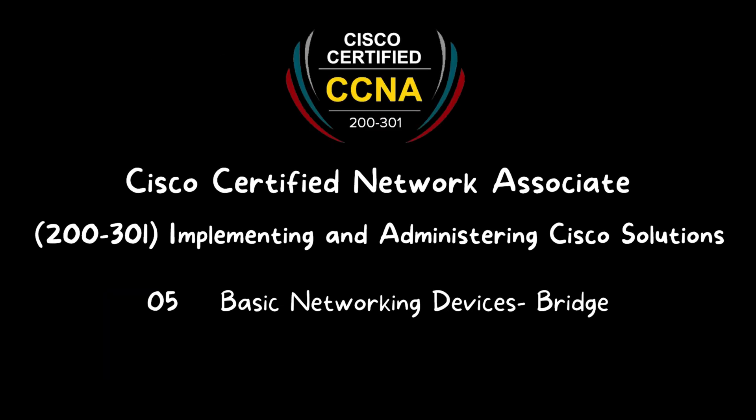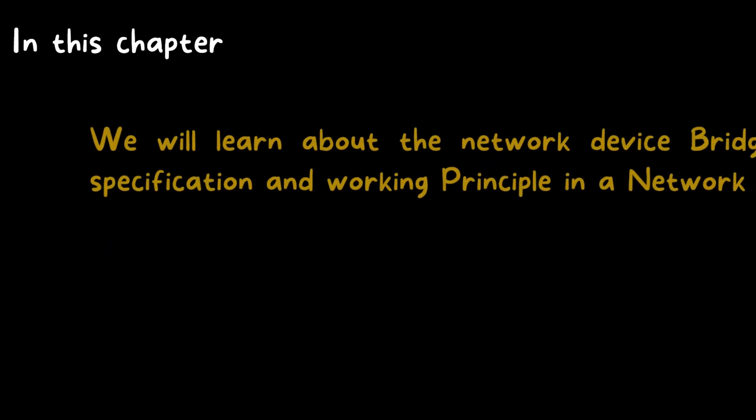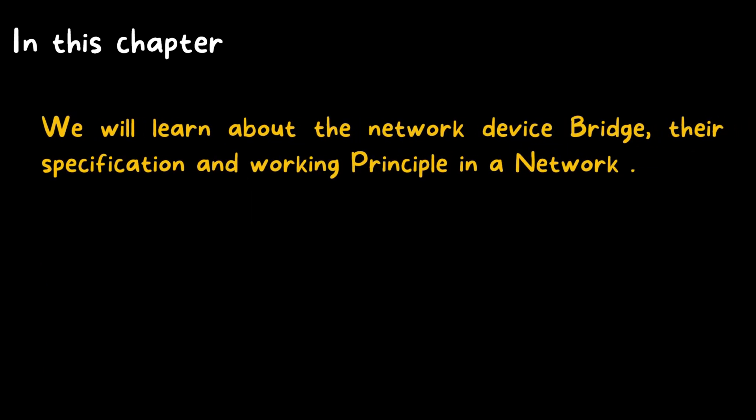Welcome to CCNA 200-301: Implementing and Administering Cisco Solutions, Chapter Number Five — Basic Networking Devices: Bridge. In this chapter, we will learn about the network device bridge, their specification and working principle in a network.